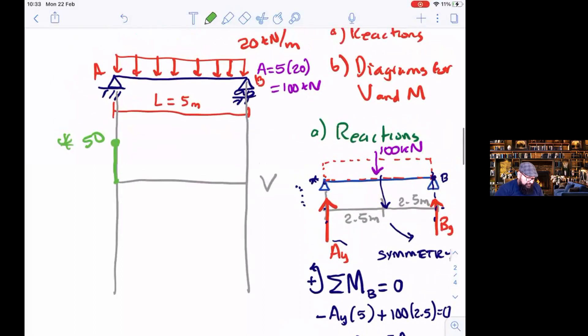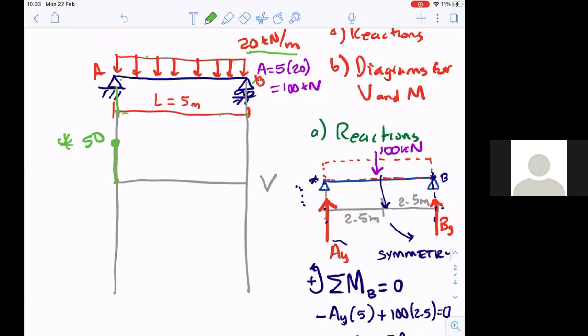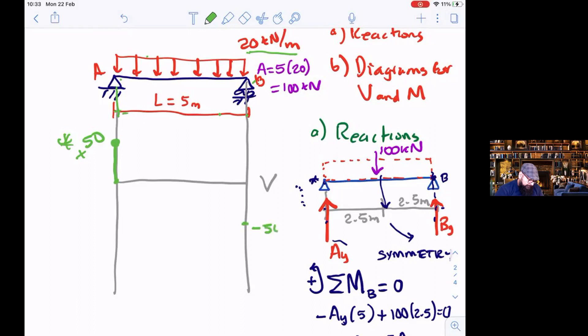Now the distributed load, this one is telling me that I go down 20 for every meter that I advance. How many meters I'm going to advance from A to B, to the end of the load? Five meters. So if I am going down 20 for each meter and I advance five, how much in total I'm going down? 100.